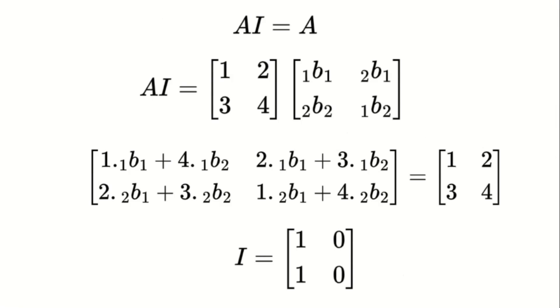With the identity matrix established, let's find the inverse of a matrix A. The inverse matrix, when multiplied by A, yields the identity matrix. Assume A has elements A, B, C, and D, and its inverse has elements W, X, Y, and Z.